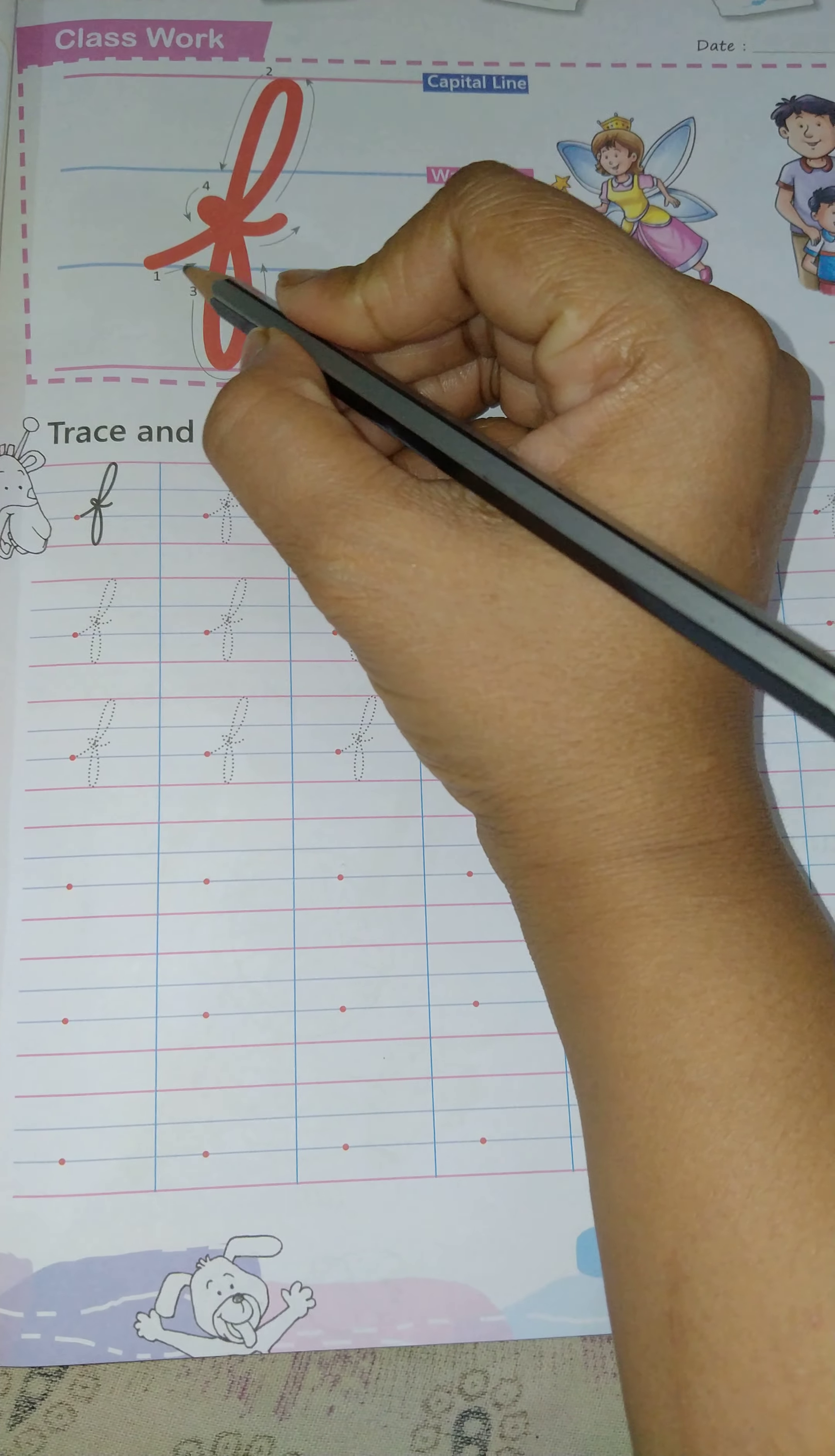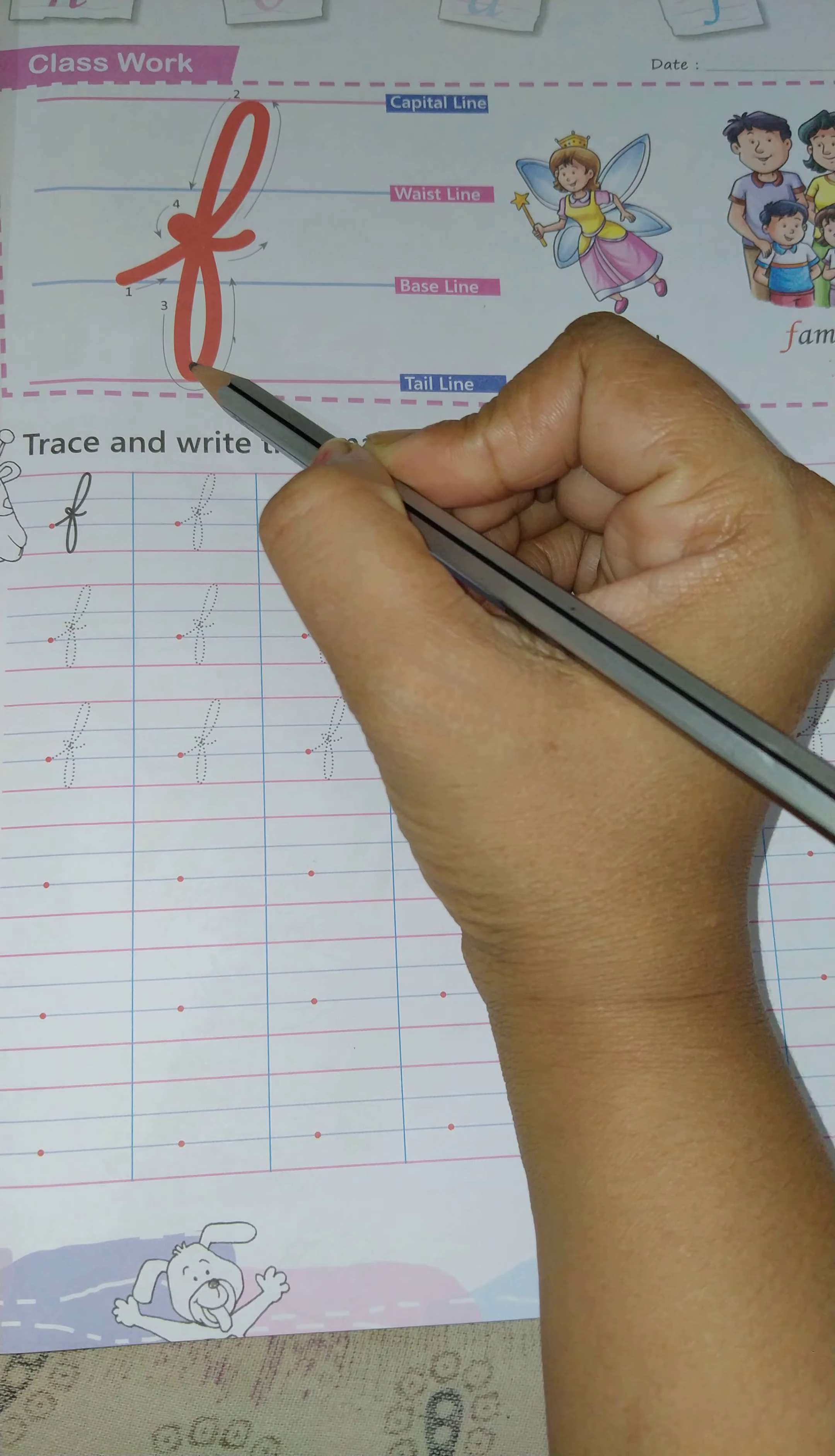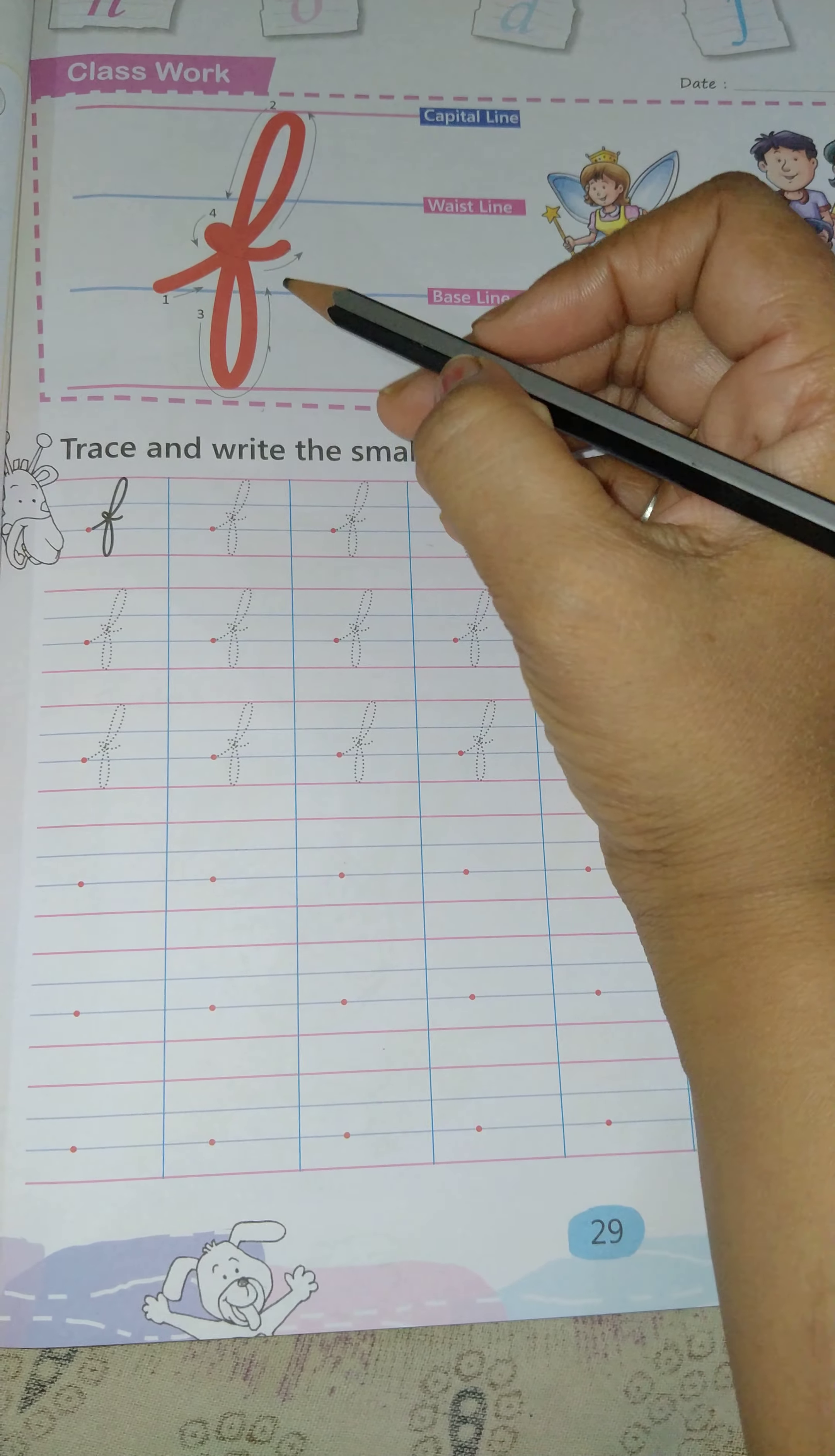Third line, from here, we will write like this. Up to the capital line, curve direct down from the tail line. Again, we will make curve there. Baseline, in between baseline and waistline, we will do again little curve like this. Very good.